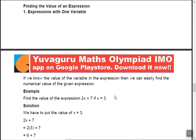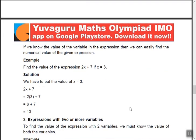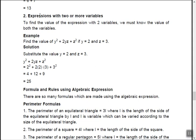Finding the value of an expression is the easiest part: simply input the given value of the variable into the expression. For example, find the value of 2x plus 7 when x equals 3 — substitute to get 2 into 3 plus 7, which is 6 plus 7 equals 13. For expressions with two or more variables, such as y squared plus 2yz plus z squared with y equals 2 and z equals 3, substitute to get 4 plus 12 plus 9 equals 25.